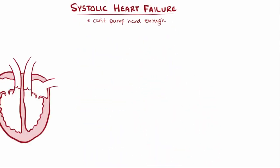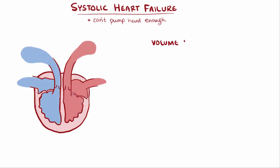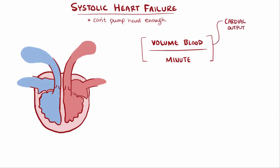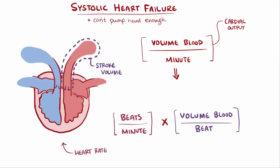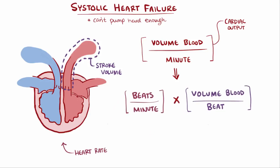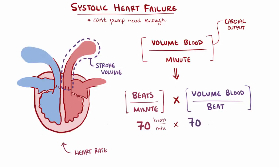First up is systolic heart failure. A mathematical way to think about this is that the heart needs to squeeze out a certain volume of blood each minute, called cardiac output, which can be rephrased as the heart rate — the number of beats in a minute — multiplied by the stroke volume, the volume of blood squeezed out with each heartbeat. For example, an adult heart might beat 70 times per minute, and the left ventricle might squeeze out 70 milliliters per beat, so 70 times 70 equals a cardiac output of 4900 milliliters per minute, which is almost 5 liters per minute.